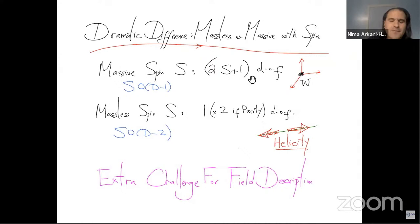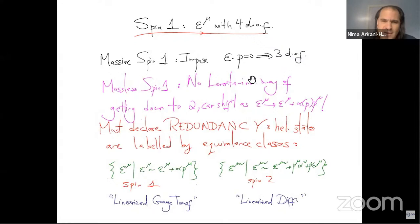So this dramatic difference between the number of degrees of freedom of massless and massive is an extra challenge for the field description. And we can see that very simply in the structure of the polarization vectors. If we start with spin one, for example, epsilon mu, of course, is four degrees of freedom. If I want to describe the three degrees of freedom of massive spin one, I can do that by imposing epsilon dot p equals zero. That gives me three degrees of freedom. That's good.